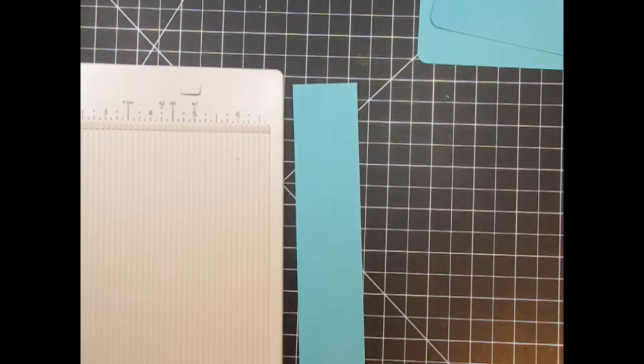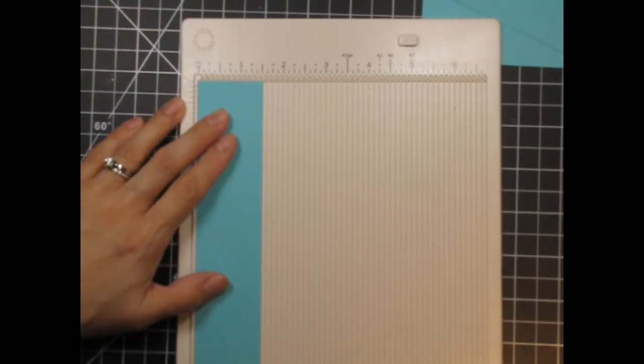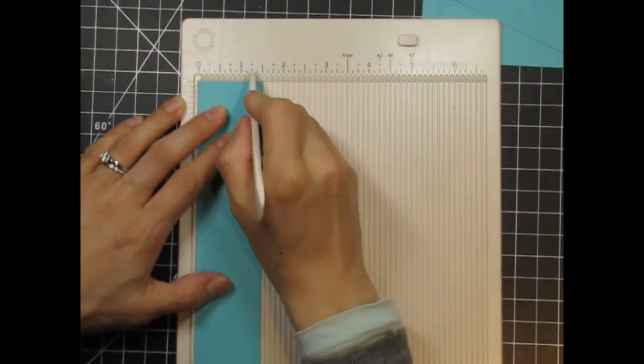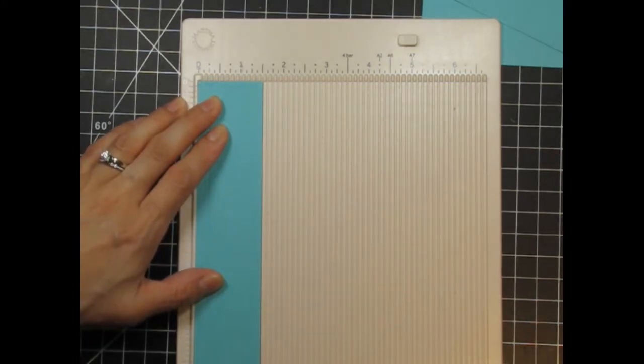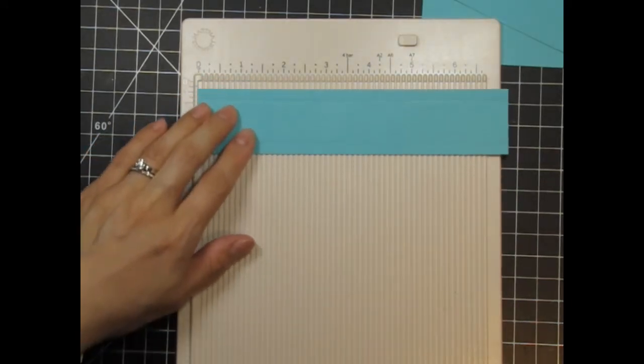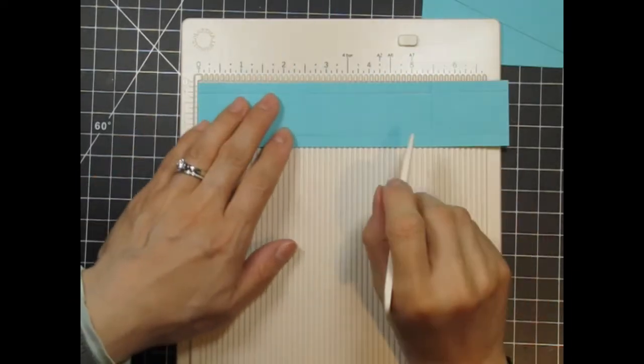Next, I take my scoreboard and score this piece 1 1⁄4 inch from each edge lengthwise. This is where the adhesive will go. Then I turn the piece of cardstock horizontally and score 1 1⁄4 inches from each end, leaving 3 3⁄4 inch in the middle.